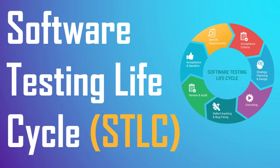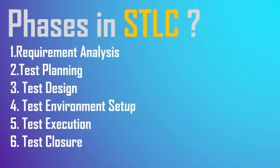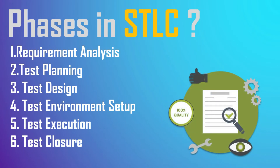The Software Testing Life Cycle, also known as STLC, identifies when to perform testing activities. Although testing varies between organizations, the STLC consists of different stages: Requirements Analysis, Test Planning, Test Design, Test Environment Setup, Test Execution, and Test Closure. Each phase of the STLC has a unique entry and exit criterion.